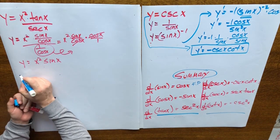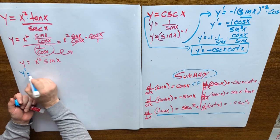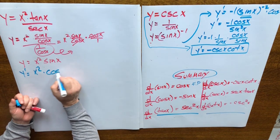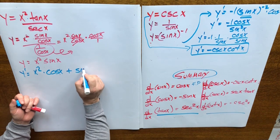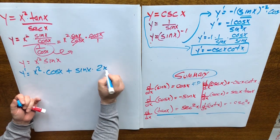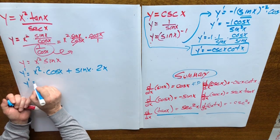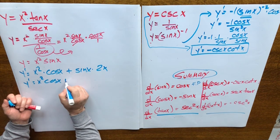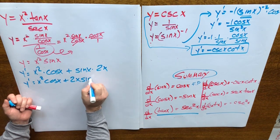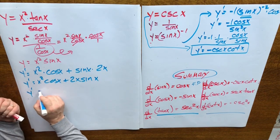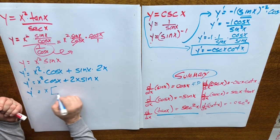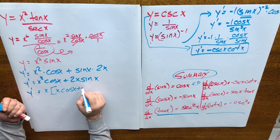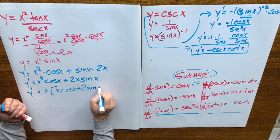Now here's the derivative using the product rule. Y prime equals: first, x squared, times the derivative of the second, plus the second, sine x, times the derivative of the first. So y prime equals x squared cos x plus 2x sine x. Common factoring out x gives: x(x cos x plus 2 sine x).